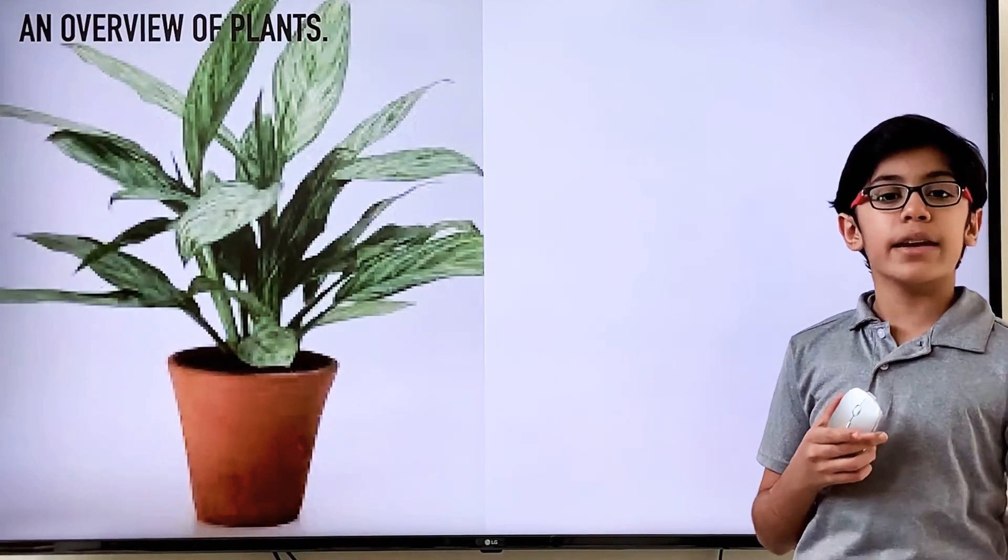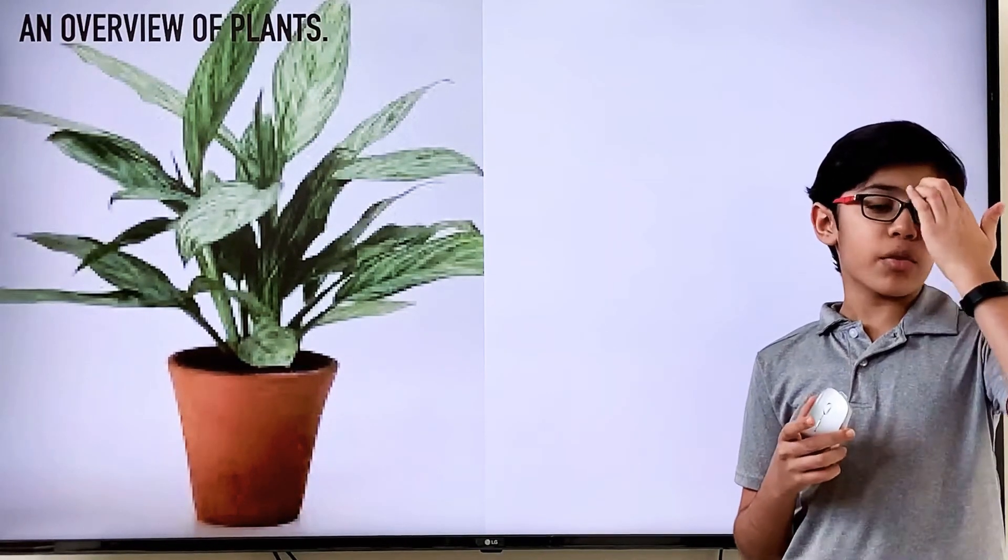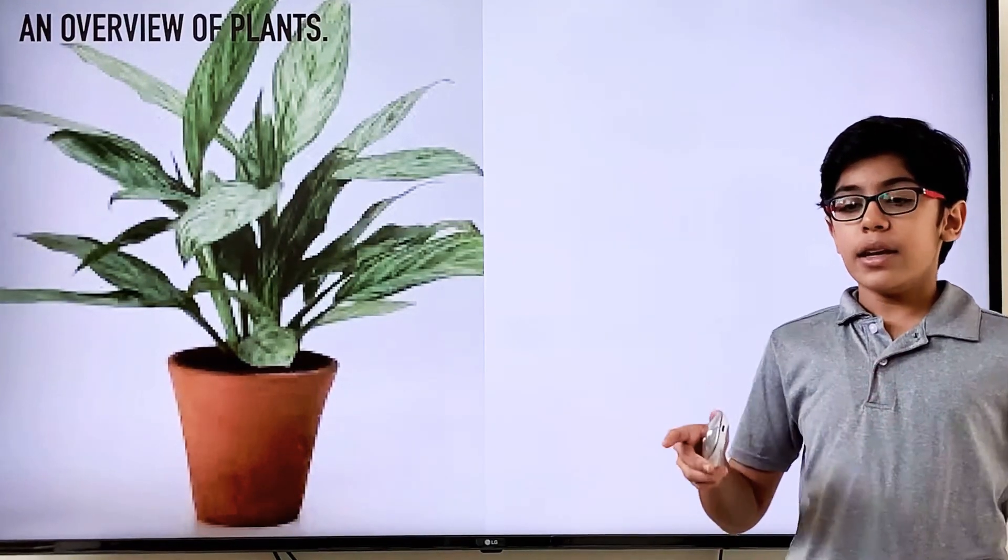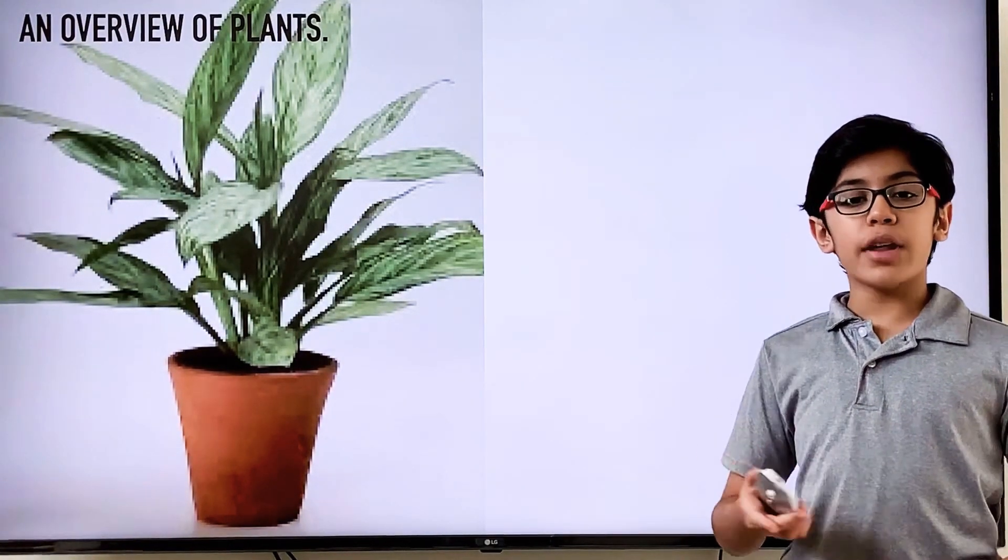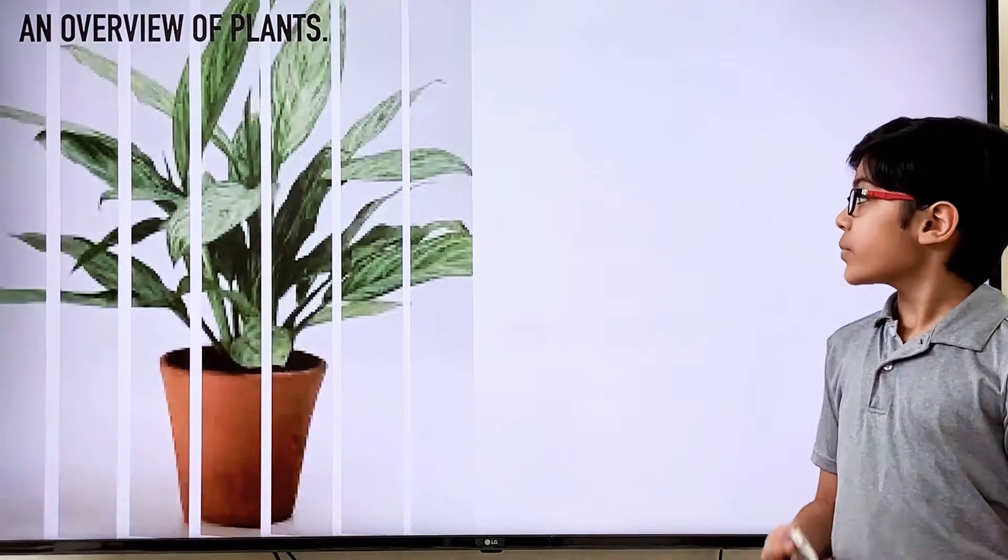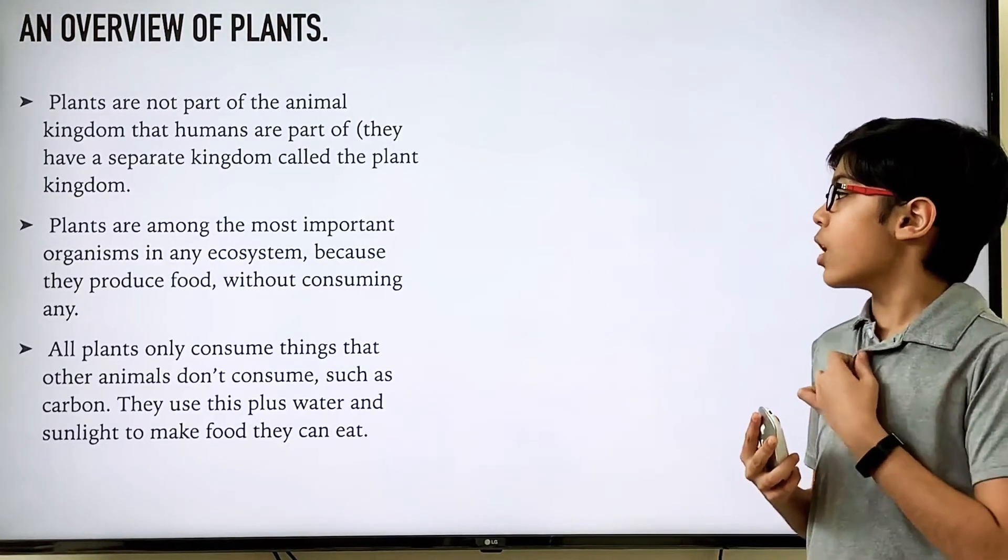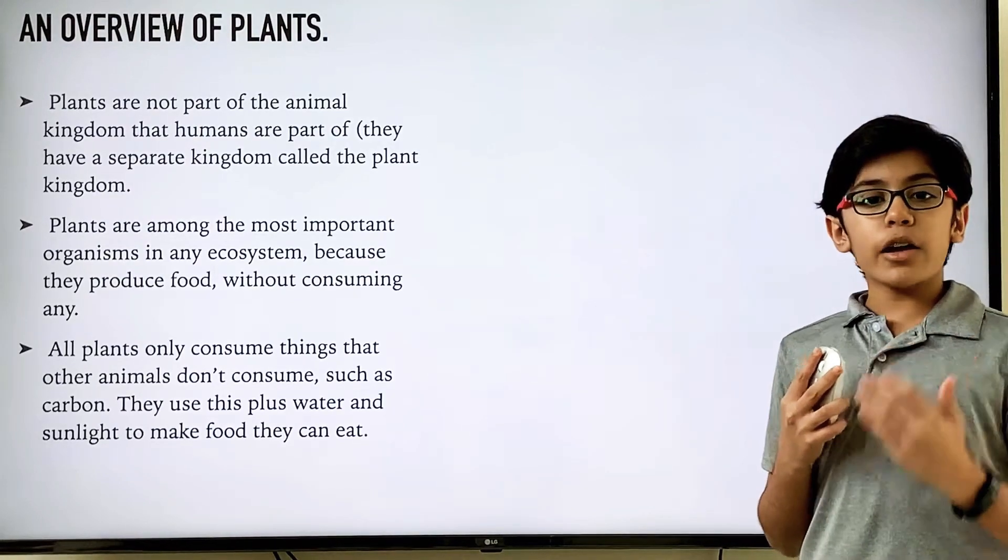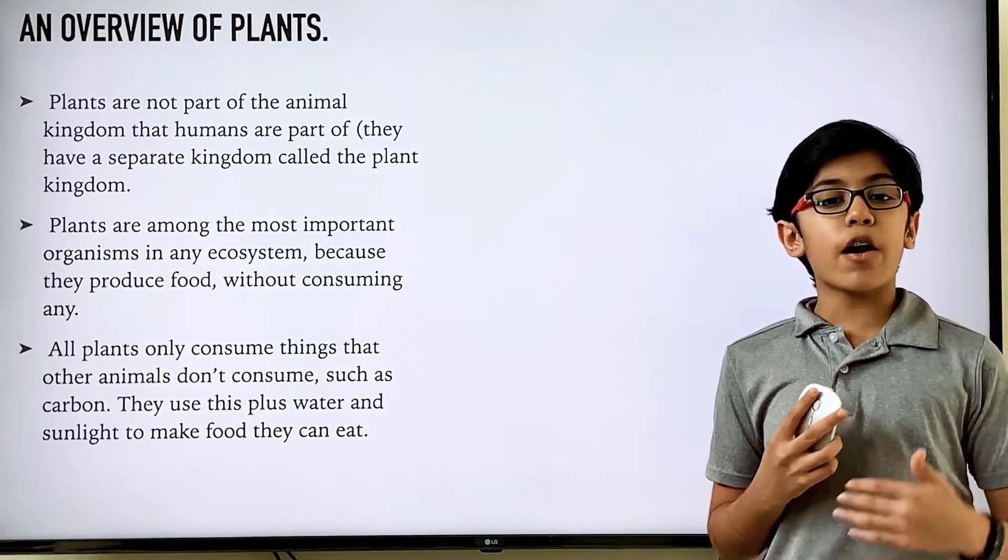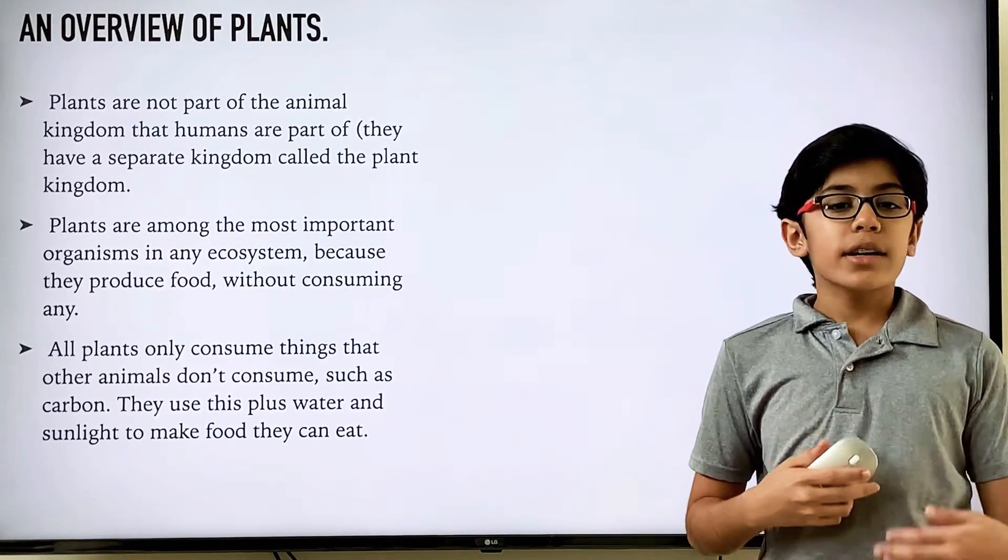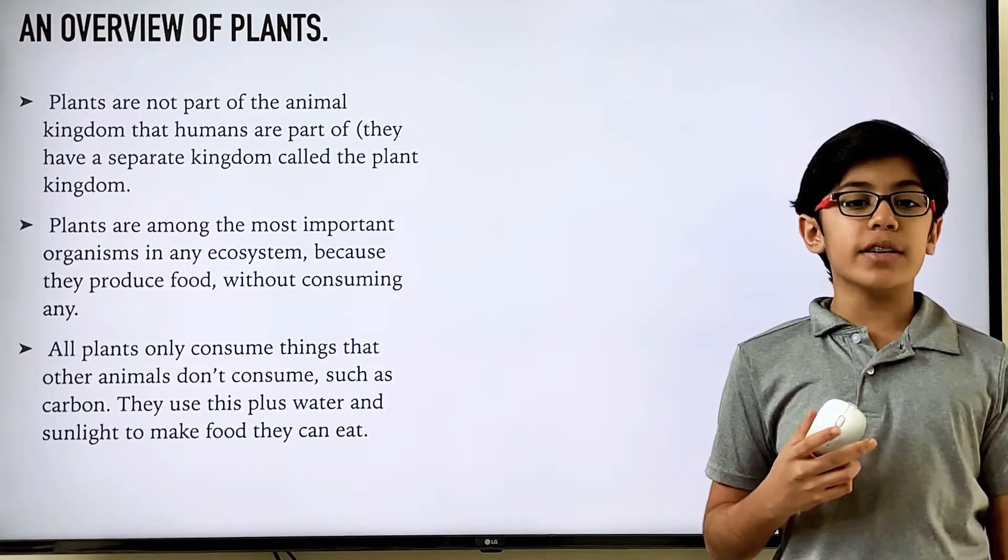They also take sunlight, water and nutrients from the soil. They then combine these little food they can eat and the byproduct is fruits and other stuff that animals can eat. Plants are extremely important. They're even called the lungs of the earth. And another important fact is that they aren't part of the animal kingdom. They have their own kingdom of species called the plant kingdom.